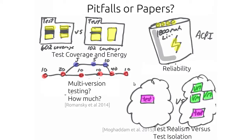Now I'll discuss pitfalls — and these are pitfalls that can become papers, or even PhD theses. First: does test coverage matter for software energy tests? A 60% coverage test might not test software energy better than a 10% coverage test, if most energy is consumed in tight loops within that 10%. Your coverage might matter, but it might not. Second: where you get your measurements or estimates from might not be reliable. If you use ACPI, many measurements come from batteries, which have their own measurement chips that may be miscalibrated.